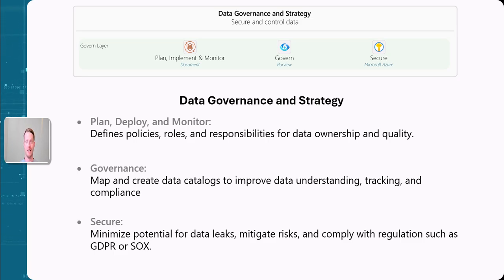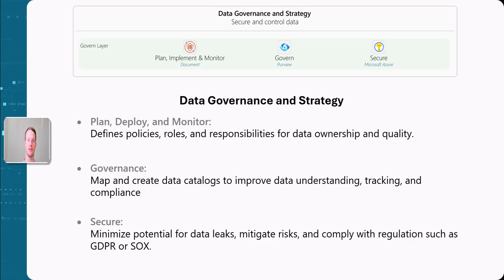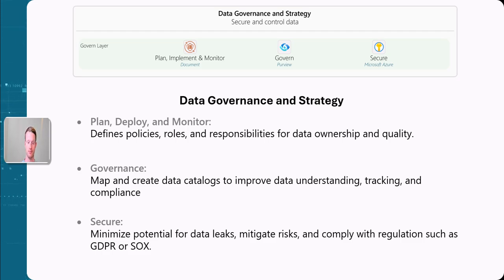Sitting on top of all of this is the data governance and strategy component. This is slightly different because it is more of a strategy piece and less of a technology piece. We always want to plan, implement, and monitor. We create things like RACI matrices, make sure that when we launch our data platform we have a strategy and understand what we're going to do with it. We also want to govern it — creating data catalogs, improving data understanding, ensuring compliance across different systems. Finally, we want to secure our data, protect against data leaks and bad actors, mitigate risks, and comply with regulations such as GDPR.